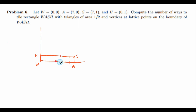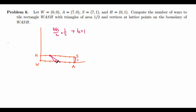Now that we know that one vertex is on the top and two vertices are on the bottom, let's consider how to find the area. If we let the base be the side formed by the two vertices on the bottom, then the height is always going to be 1. So in order for the triangle to have area 1/2, we need base times height over 2 equal 1/2. Since the height is 1, the base is also 1. So all triangles of area 1/2 have two adjacent vertices on the bottom and one on the top, or two adjacent vertices on the top and one on the bottom.